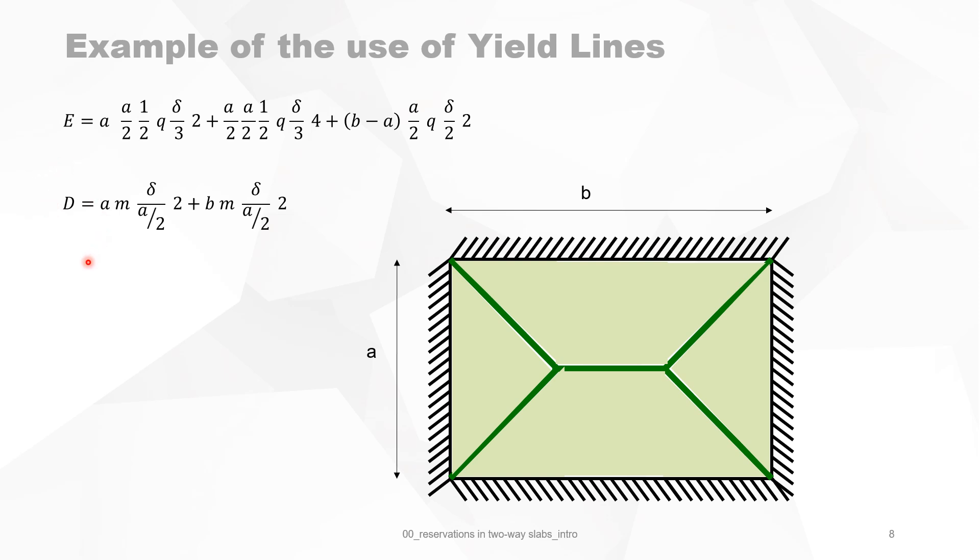Then we look at the work done by the internal bending moments. We assume that internal bending moment equals M. Then you look at those lines, we project them vertically to the rotation axis, and then the length L of the rotation axis is B times the bending moment M, and then times the angle of rotation, which is delta divided by this distance A/2. And we got it: this is 1, and the other side for this rotation axis is 2, so that's that.